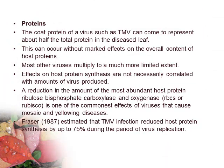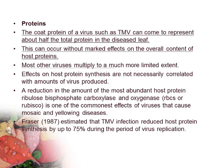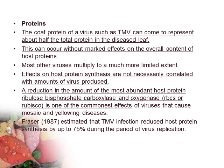Proteins. The coat protein of a virus such as DMV can come to represent about half the total protein in the diseased leaf. This can occur without marked effect on the overall content of host proteins. Most other viruses multiply to a much more limited extent. Effects on host protein synthesis are not necessarily correlated with amounts of virus produced. A reduction in the amount of the most abundant host protein, ribulose bisphosphate carboxylase and oxygenase, is one of the commonest effects of viruses that cause mosaic and yellowing diseases.